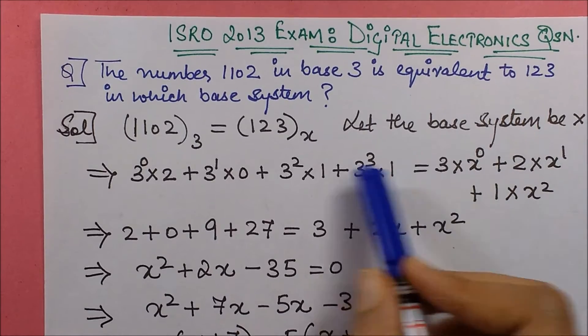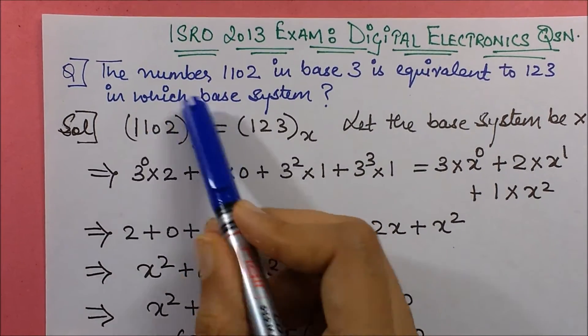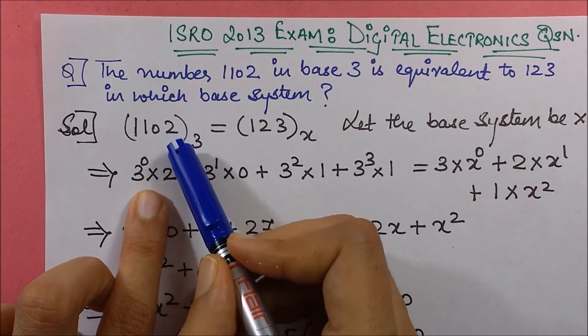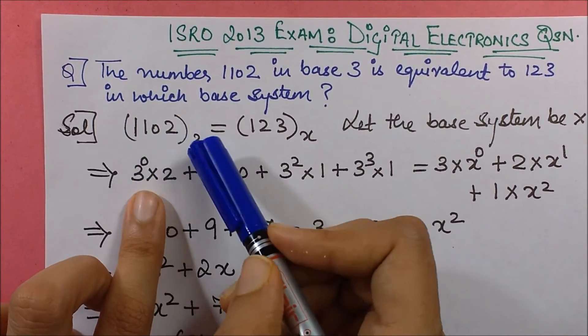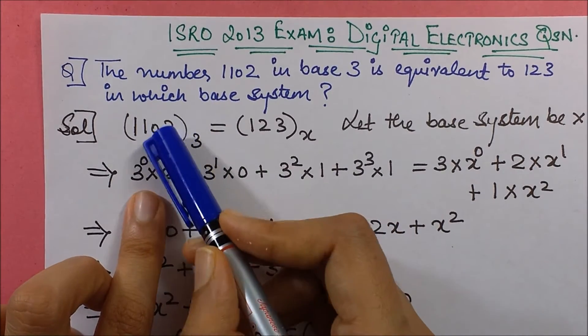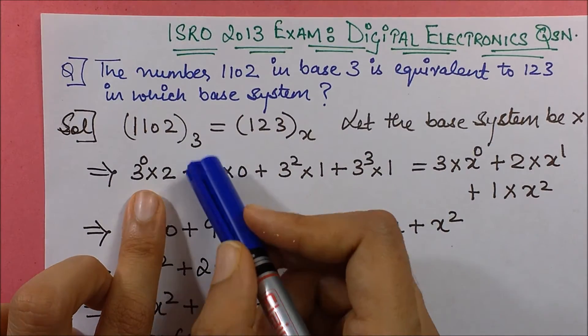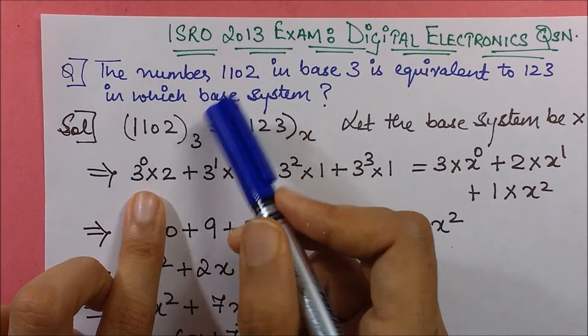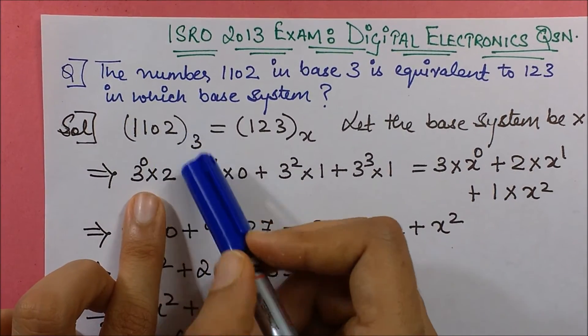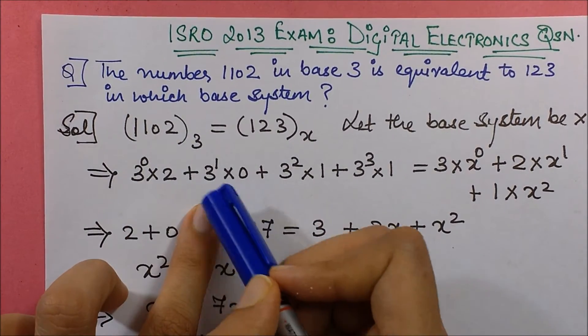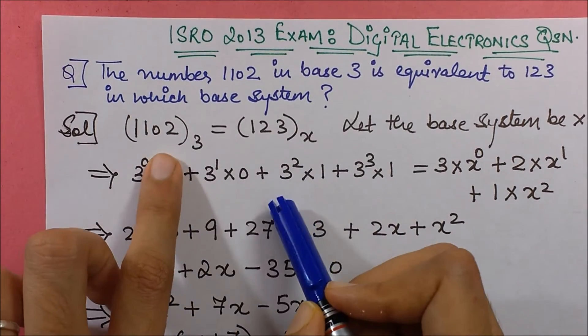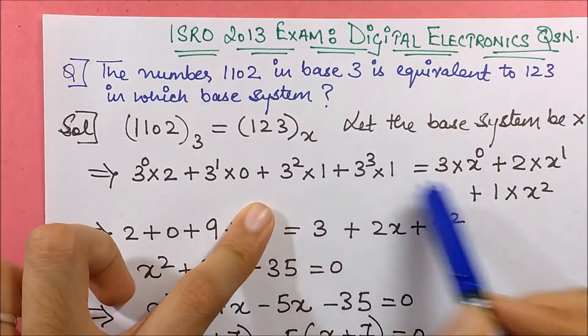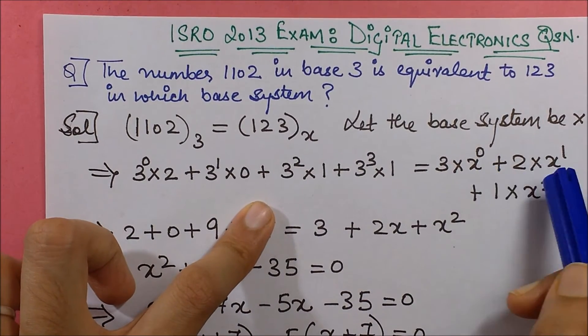Then I just apply the expansion. This can be written as 3 to power 0 into 2 because this has base 0. If you just write it out as your units, tens, hundreds, so on, I will just multiply the digits with their weights. So this one has weight 3 to power 0 into 2 plus 3 to power 1 into 0 plus 3 to power 2 into 1, so on. And similarly, this side will multiply each one of them with the weights in powers of x.